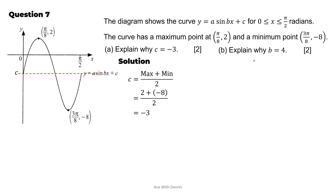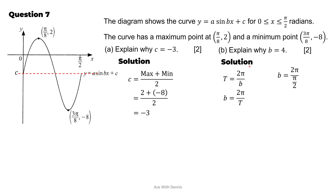Part b: explain why b equals 4. The period T equals 2π over b, so b equals 2π over T. From the diagram, one complete cycle spans π/2, so T equals π/2. Therefore b equals 2π divided by (π/2) equals 2π times 2 over π, cancel π, giving b equals 4.